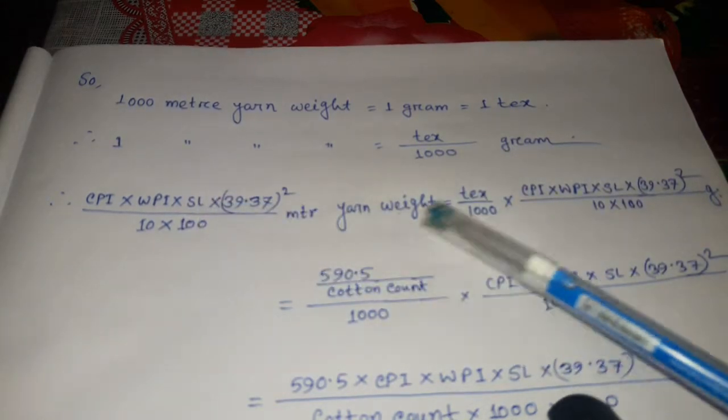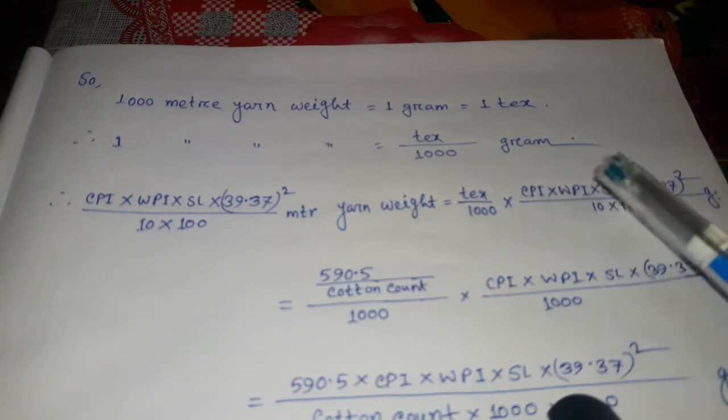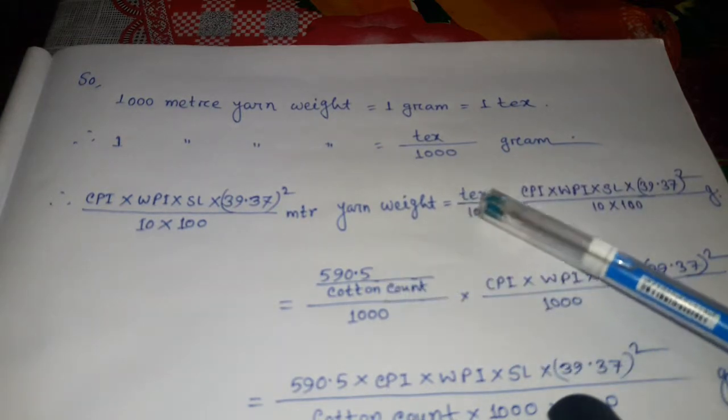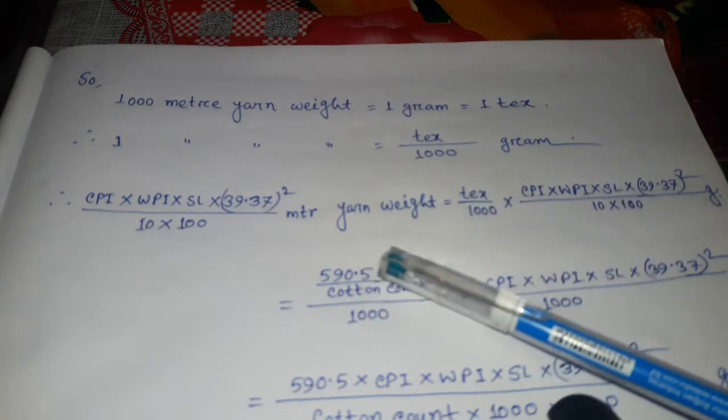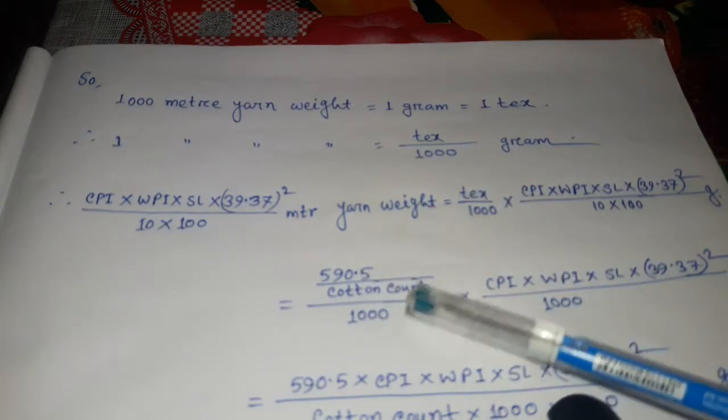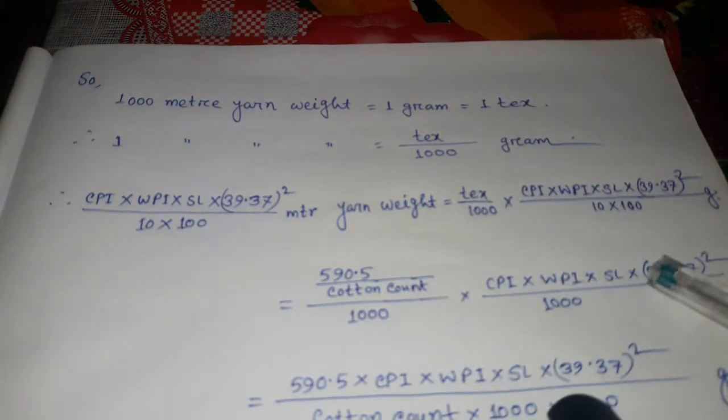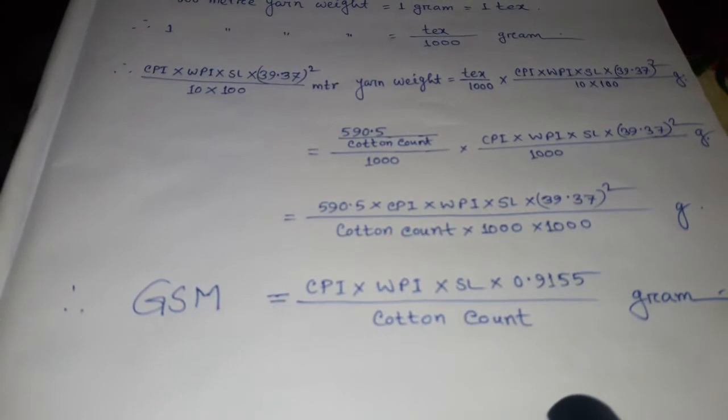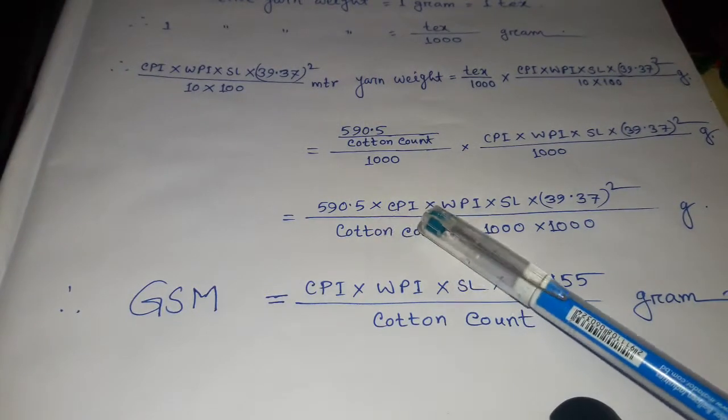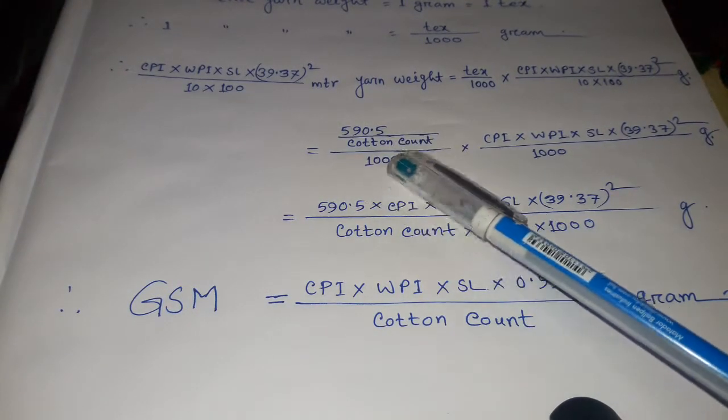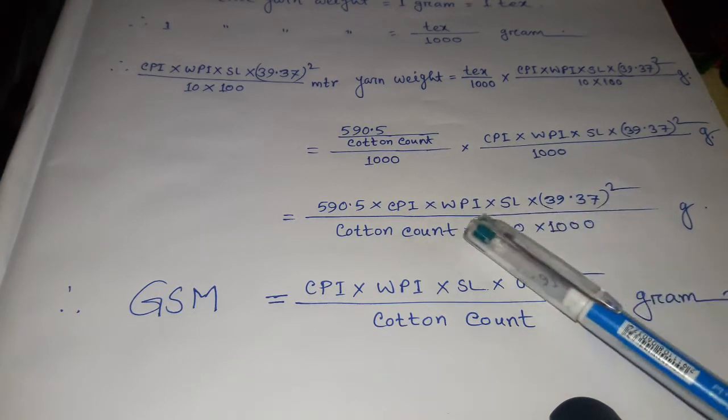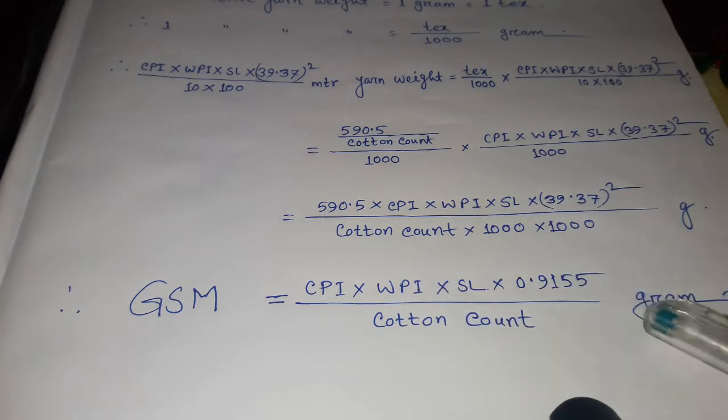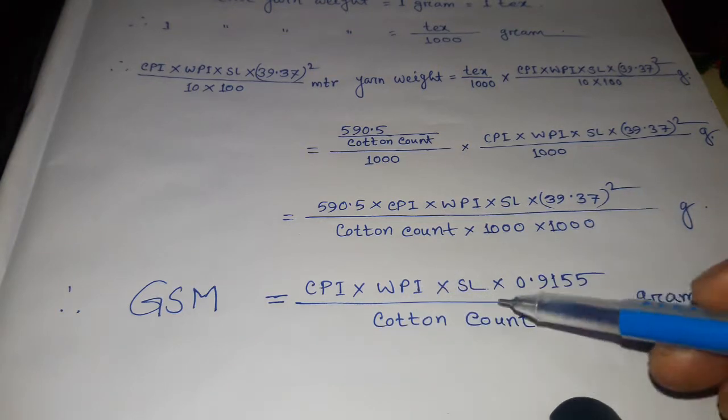Now we calculate the tex count. Tex count equals 590.5 divided by cotton count, divided by 1000. So for calculation we get stitch length in millimeters.